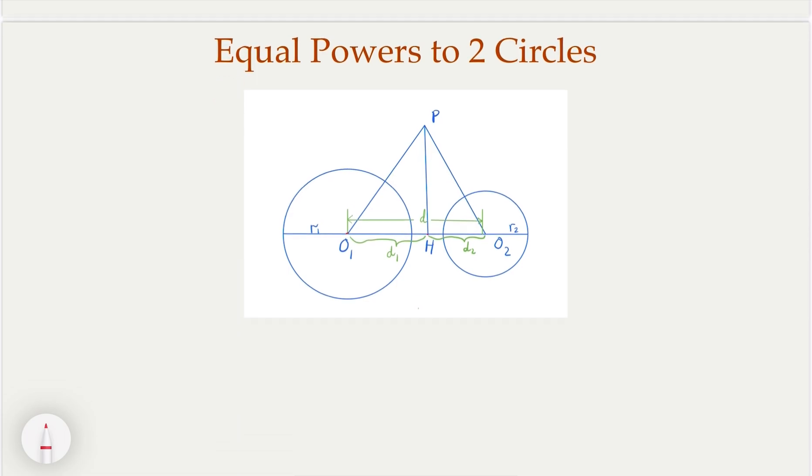So the two circles are fixed. R1 is fixed. R2 is fixed. The distance between them, D, is fixed. I claim that in order to have equal power, it must have that this edge is a fixed point. In other words, it doesn't really matter where P, how far P is. Let's say height is H, doesn't really matter what H value is.